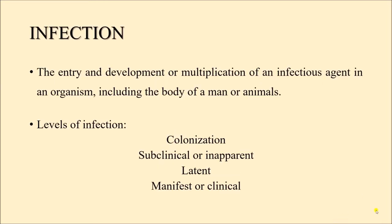Starting with infection: the entry and development or multiplication of an infectious agent in an organism, including the body of a man or animals. Whenever an infectious agent — that can be a bacteria, virus, fungus, or parasite — enters and develops or multiplies in the body of a human being or animal, it is known as infection. There are different levels: colonization, subclinical or inapparent infection, latent infection, and manifest or clinical infection.